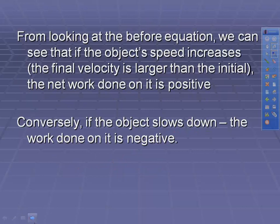If the object's speed increases, the work done on it is positive. The total work equals one-half mv_f² minus one-half mv_i². If v_f is larger, that means it's speeding up, which means work is positive. On the other hand, if v_f is smaller than the initial, the object is slowing down and the work done on it is negative.